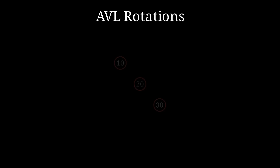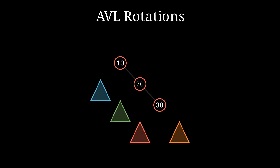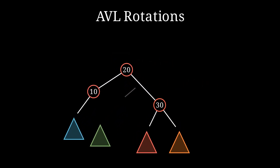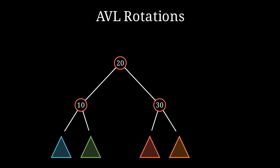There are four types of rotations in an AVL tree. The first one is a left-left rotation. It is used when the tree is heavy on the right side. Here, the root has balance factor negative 2, and the balance factor of the right child is negative 1, which triggers a left-left rotation. We rotate left — node 20 becomes the new root, node 10 becomes its left child, and the pointers to the subtrees are updated. After the rotation, the heights and balance factors are within the acceptable range.